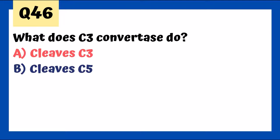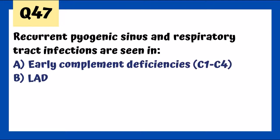Recurrent pyogenic sinus and respiratory infections are seen in early complement deficiencies — C1 to C4 deficiency leads to increased susceptibility to Strep pneumoniae and Haemophilus influenzae type B, causing recurrent pyogenic and sinus and respiratory tract infections.